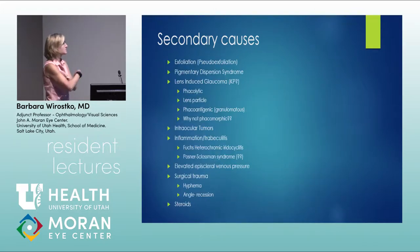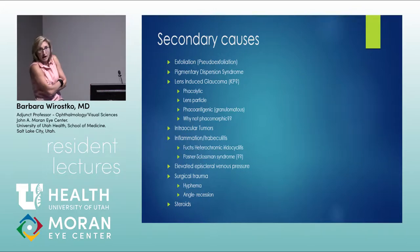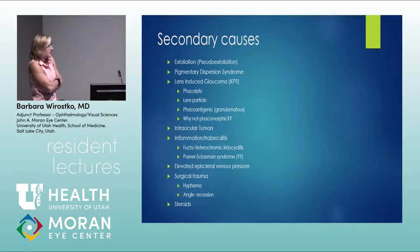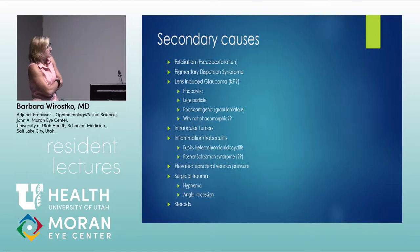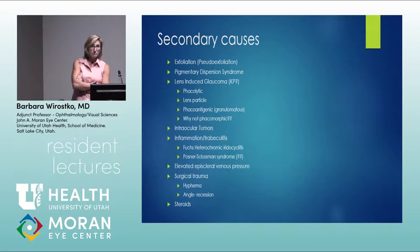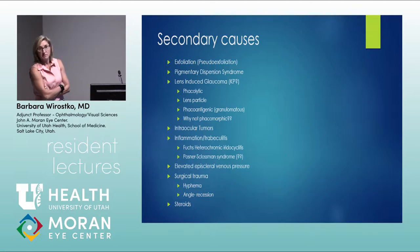Secondary causes of glaucoma require a reason for elevated IOP or optic nerve damage. Key categories include exfoliation (pseudo-exfoliation), pigmentary dispersion, and lens-induced glaucoma — phacolytic and phacoantigenic. The key principle is to eliminate the inciting factor, whether it's the cataract or remaining lens particles. There's often an inflammatory component as well.